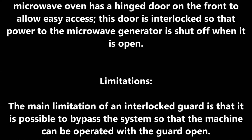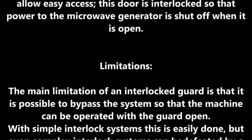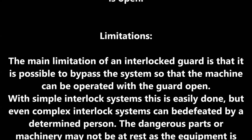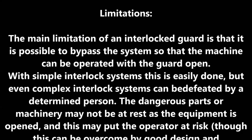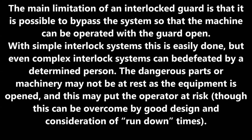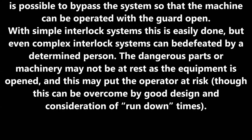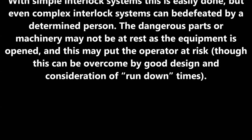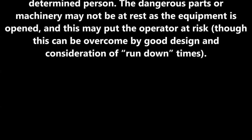Limitations: The main limitation of an interlocked guard is that it is possible to bypass the system so that the machine can be operated with the guard open. With simple interlock systems this is easily done, but even complex interlock systems can be defeated by a determined person. The dangerous parts of machinery may not be at rest as the equipment is opened, and this may put the operator at risk, though this can be overcome by good design and consideration of run-down times.